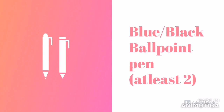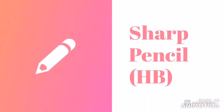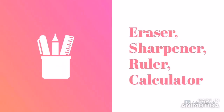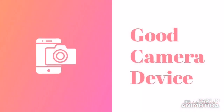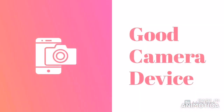Ensure to keep your stationery items well organized and handy. This should include at least two ball pens with black or blue ink, a sharp pencil, eraser, sharpener, ruler, and a calculator if required. Although you can use the inbuilt calculator during your exam on the exam page. Last but very important, you should keep a good camera device with internet connectivity for scanning your answer sheets.